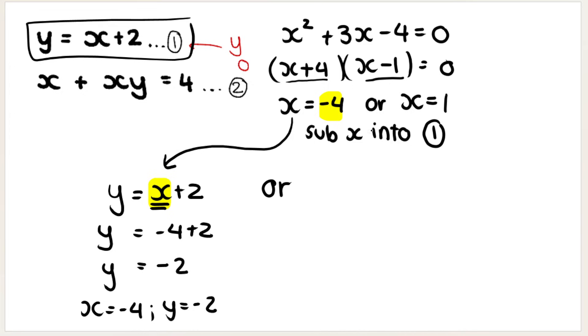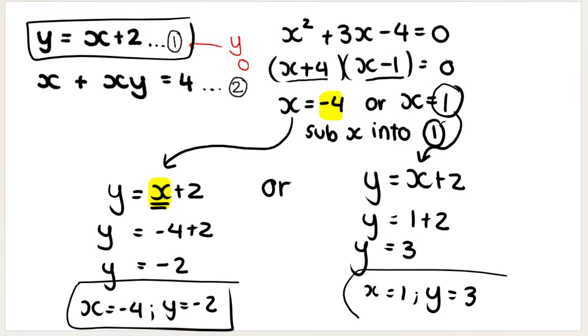Or we're going to do it again. So we're going to use equation 1, but we're going to put this X, 1, in the place of X. So Y would then be 3. So if X is 1, Y is 3. So I have two options for what X and Y could equal to.